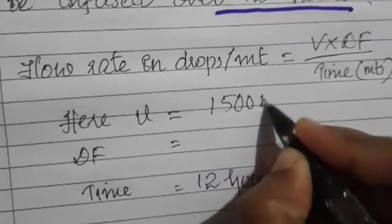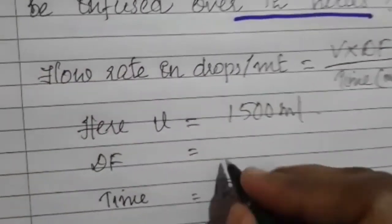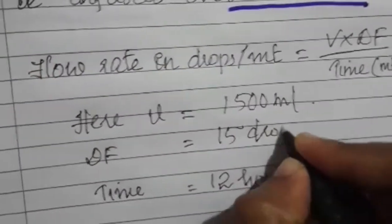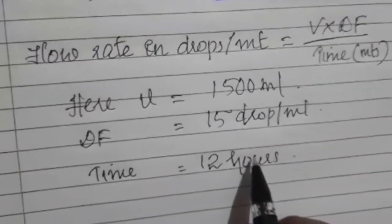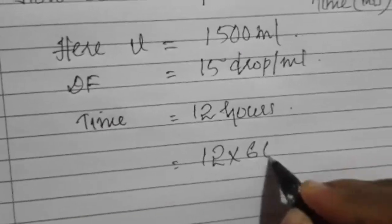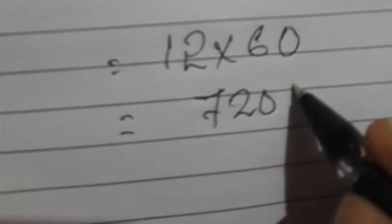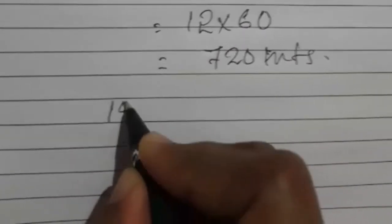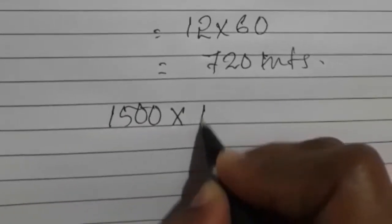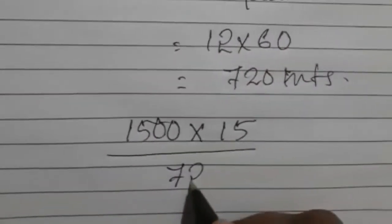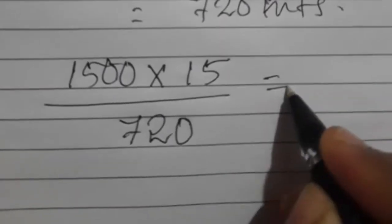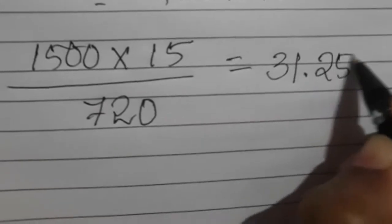Total volume to be infused is 1500 mL, drop factor is 15 drops per mL, and time is 12 hours. We need to convert time to minutes: 12 × 60 = 720 minutes. Substituting into the formula: 1500 × 15 ÷ 720.